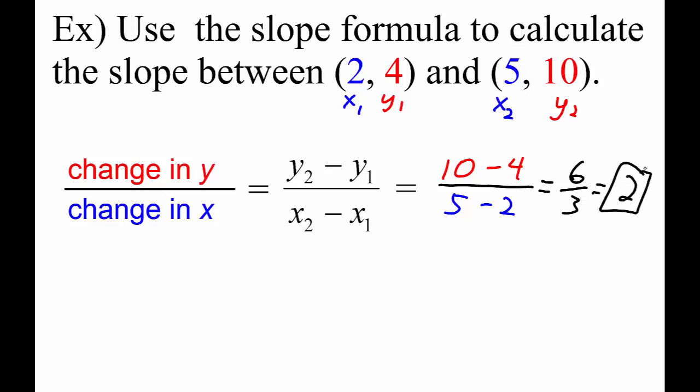So the slope of the line between those two points is 2. For every 2 units up, the line goes 1 unit over.